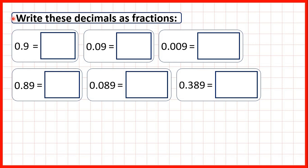We need to write these decimals as fractions. First we have 0.9. The first digit after the decimal point is the tenths digit, so what we can do is draw a line across from the decimal point and write a denominator of 10. So we have 9 tenths.